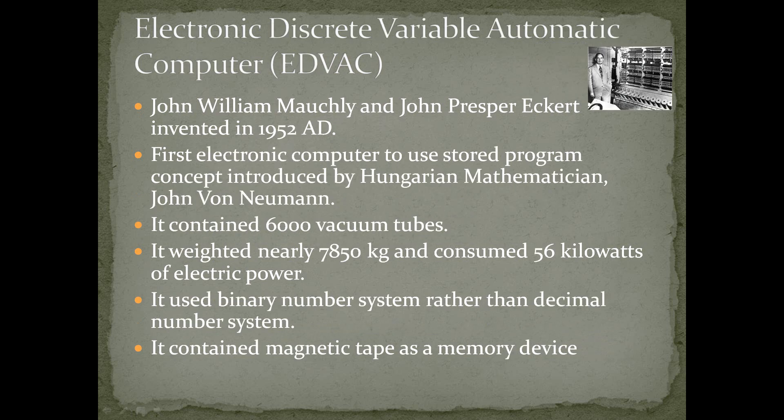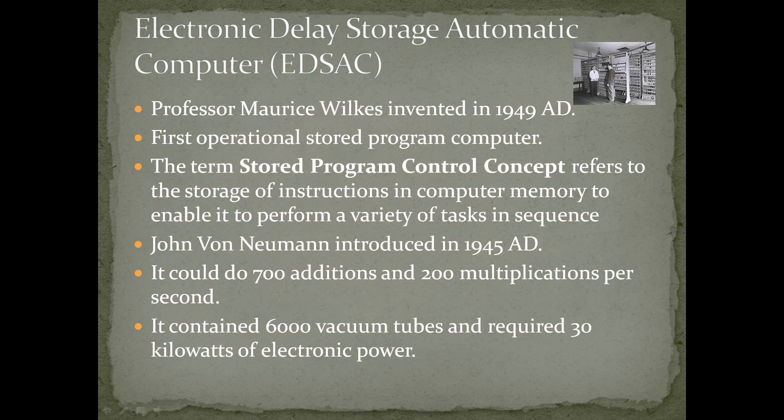EDVAC — Electronic Discrete Variable Automatic Computer — was invented by John William Mauchly and John Presper Eckert in 1952 A.D. It was the first electronic computer to use the stored program concept, introduced by Hungarian mathematician John von Neumann. It contained 6,000 vacuum tubes, weighed nearly 7,850 kg, and consumed 56 kilowatts of electric power. It used the binary number system rather than the decimal number system, and contained magnetic tape as a secondary memory device.